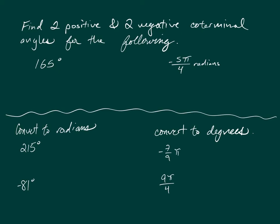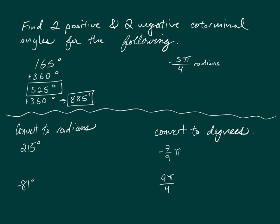To find a coterminal angle in degrees, add 360 degrees. That gives 525 degrees, and adding another 360 gives 885 degrees — those are the two positive coterminal angles. For negative coterminal angles, subtract 360 instead: you get negative 195 and negative 555 degrees.